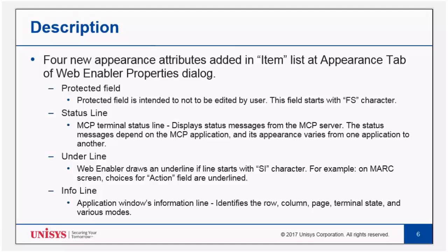Underline: WebEnabler draws an underline if the line starts with an SI character. For example, on the mark screen, choices for the action field are underlined. Info line: the application window's information line identifies the row, column, page, terminal state, and various modes.